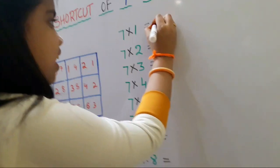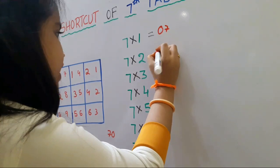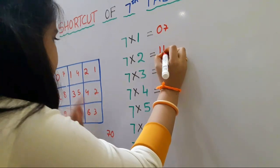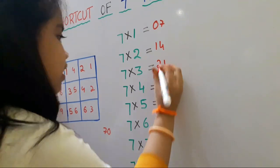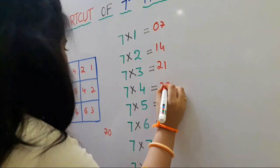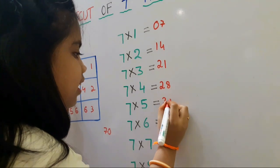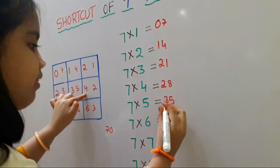7 ones are 7. 7 twos are 14. 7 threes are 21. 7 fours are 28. 7 fives are 35.